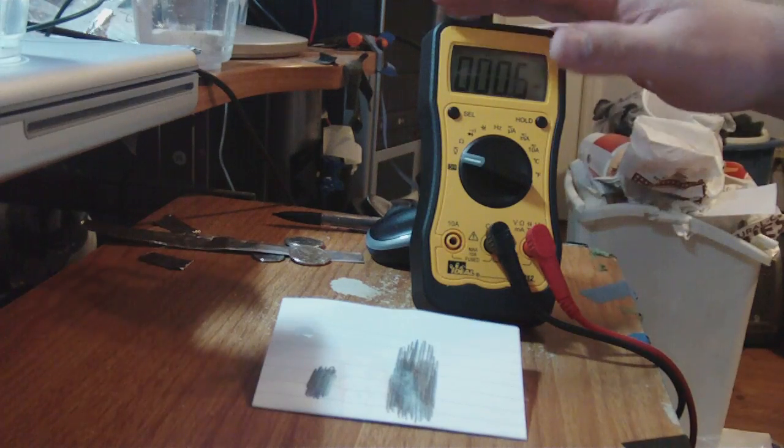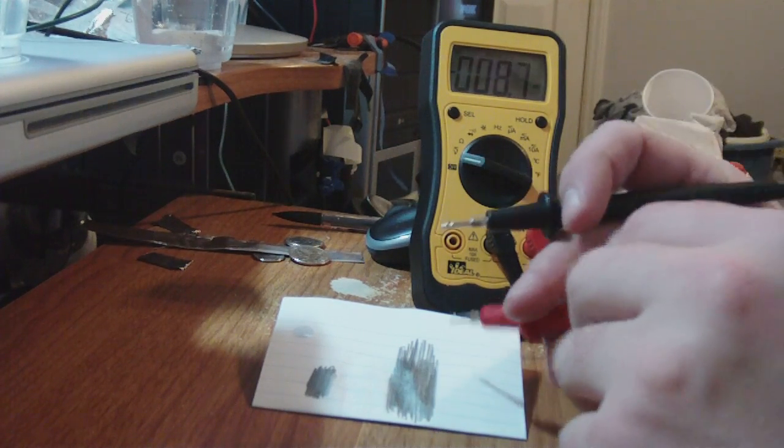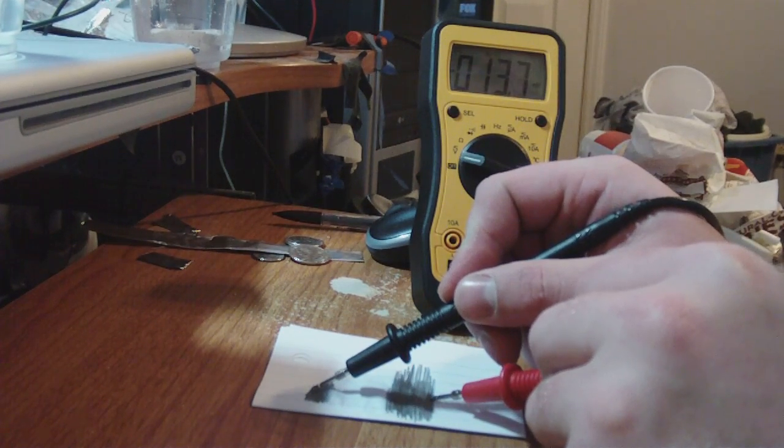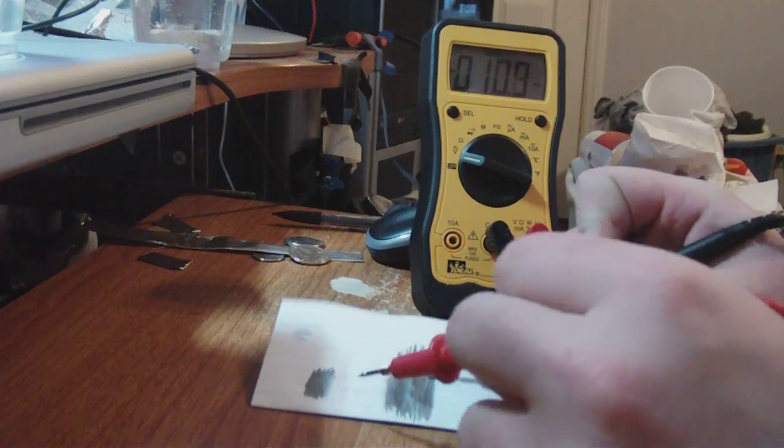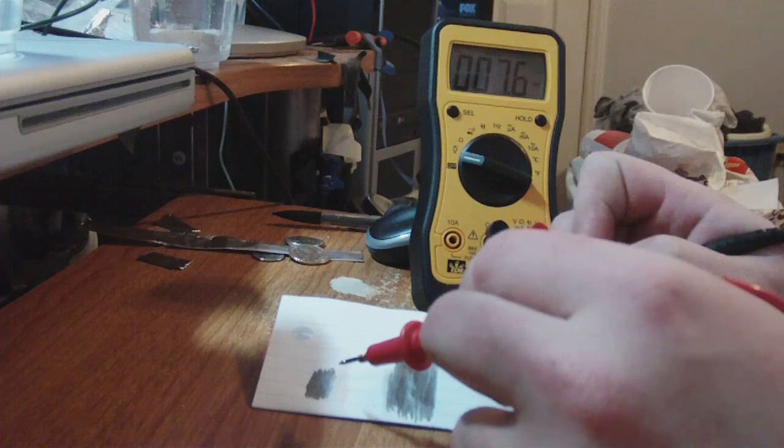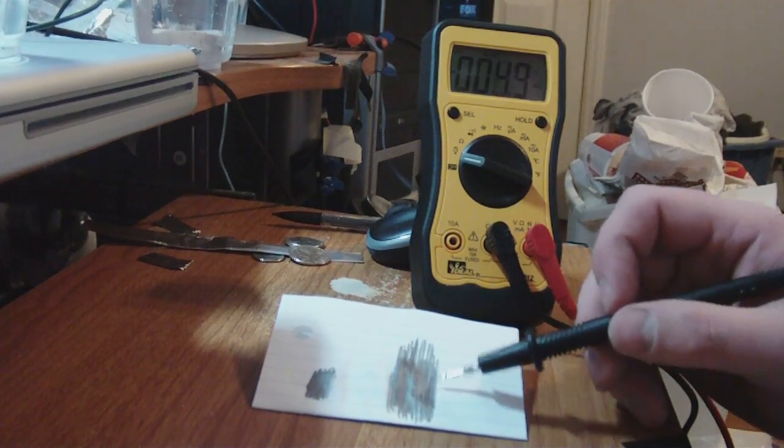Then we take our meter and we'll put our probes on it. There we go. We're bringing negative 14. There's positive. So that plate right there is positive and this plate is negative.